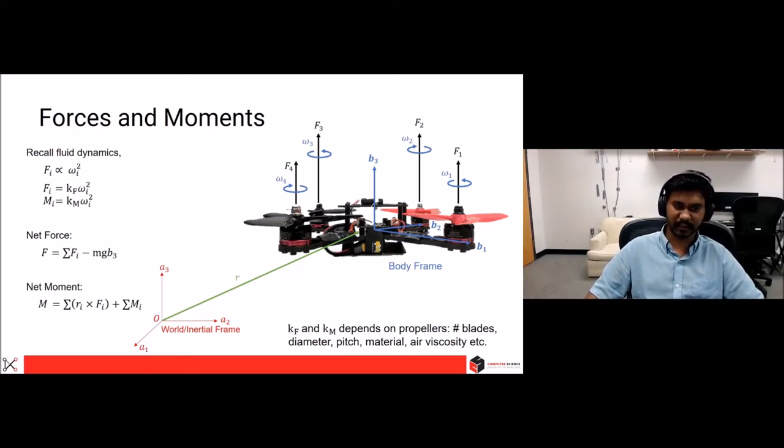And the net moment is written as summation of r cross f plus summation of the moments obtained by the motors. That's clearly written in the last equation here.